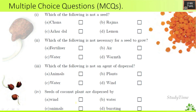Multiple choice questions: First question — which of the following is not a seed? The answer is lemon. Second question — which of the following is not necessary for a seed to grow? The answer is warmth. Third question — which of the following is not an agent of dispersal? The answer is plants. Fourth question — seeds of coconut plant are dispersed by wind, water, animals, or bursting? The answer is water.